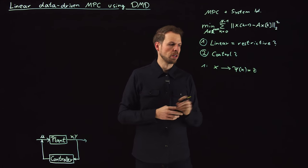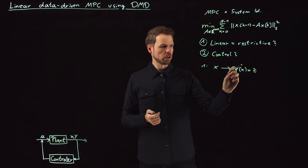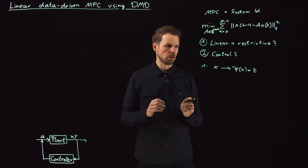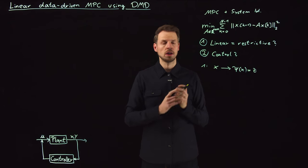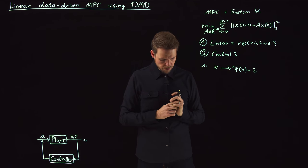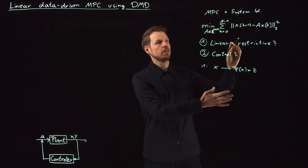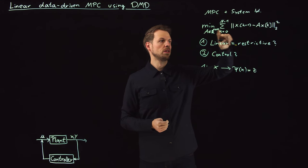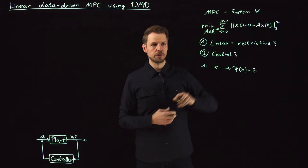So we transform our data using a dictionary. This can be sines and cosines, polynomial terms. You can use a neural network to realize this mapping. What we are going to use in the code in a minute is polynomial terms. So what you do is you simply lift this and then you can do the DMD algorithm on this lifted dynamics.